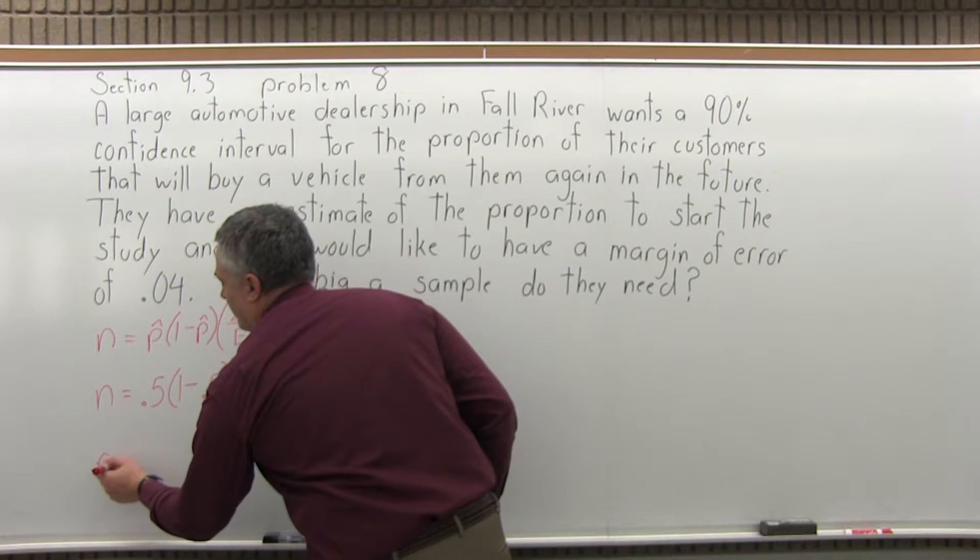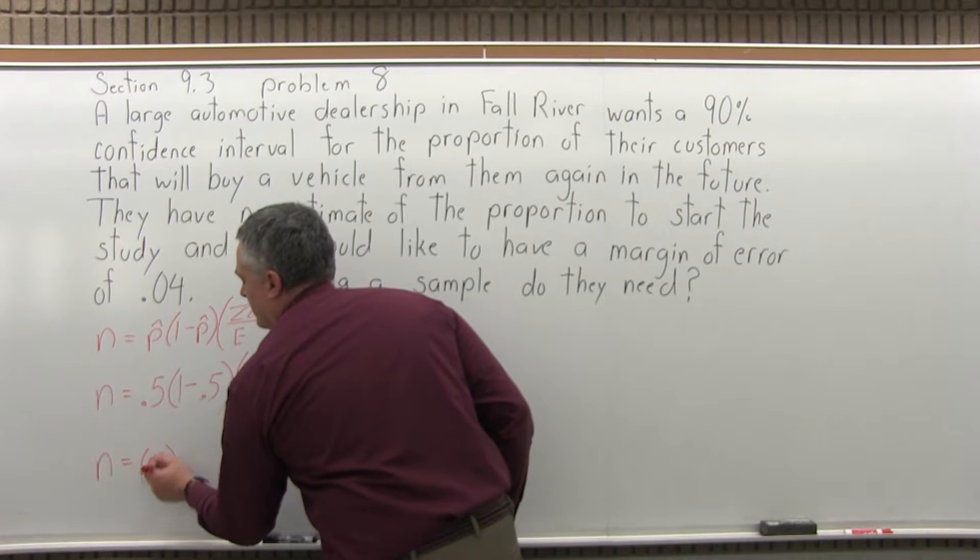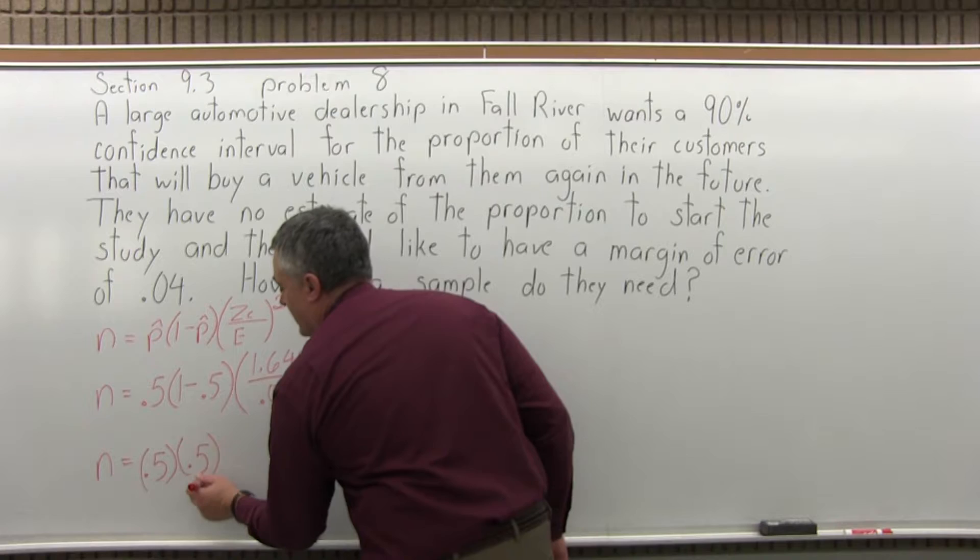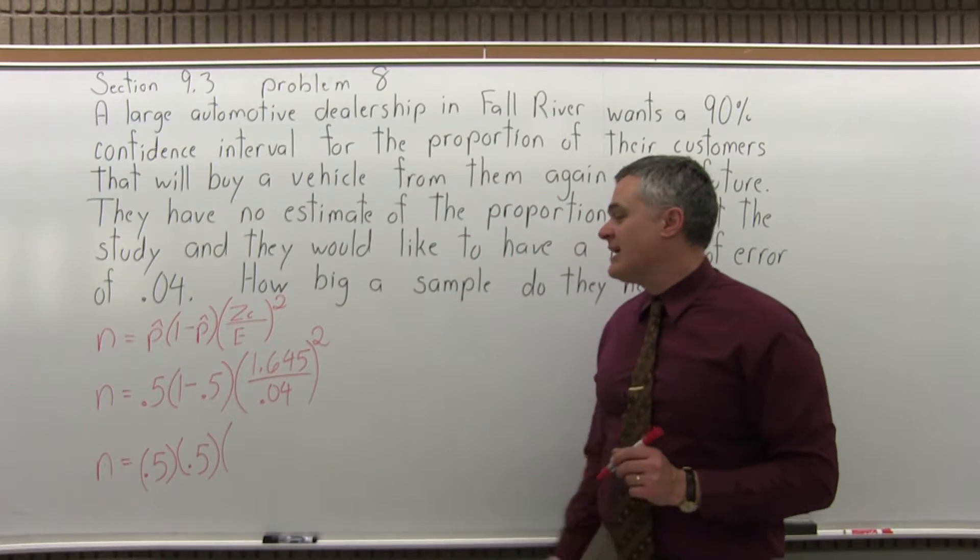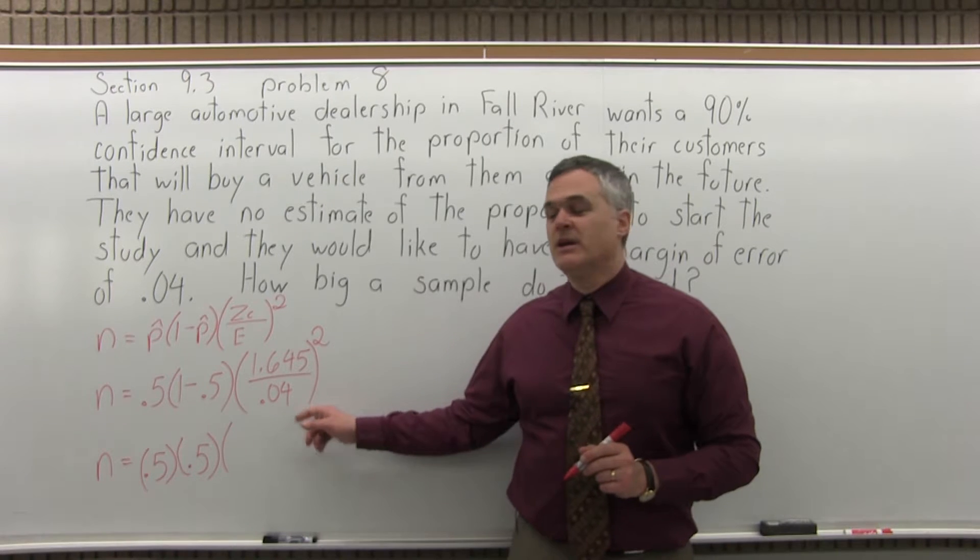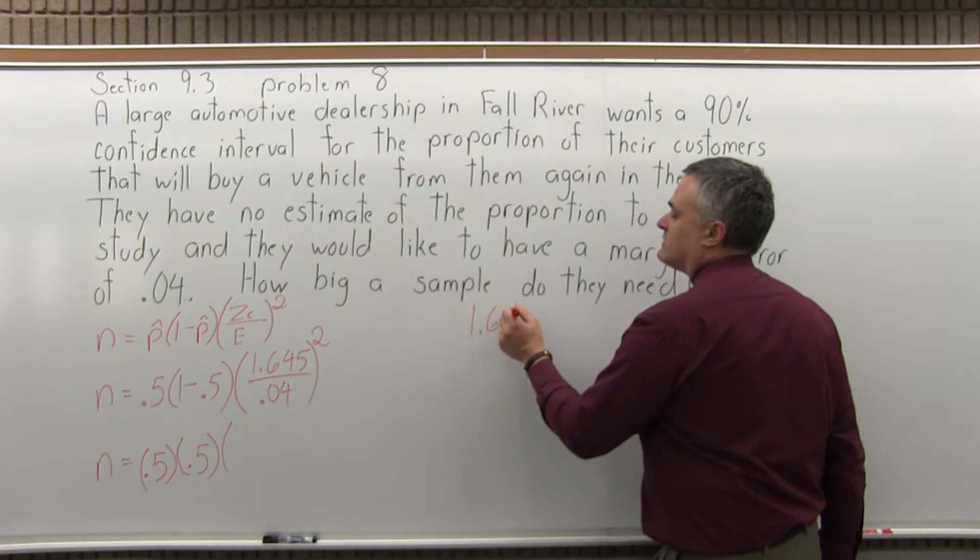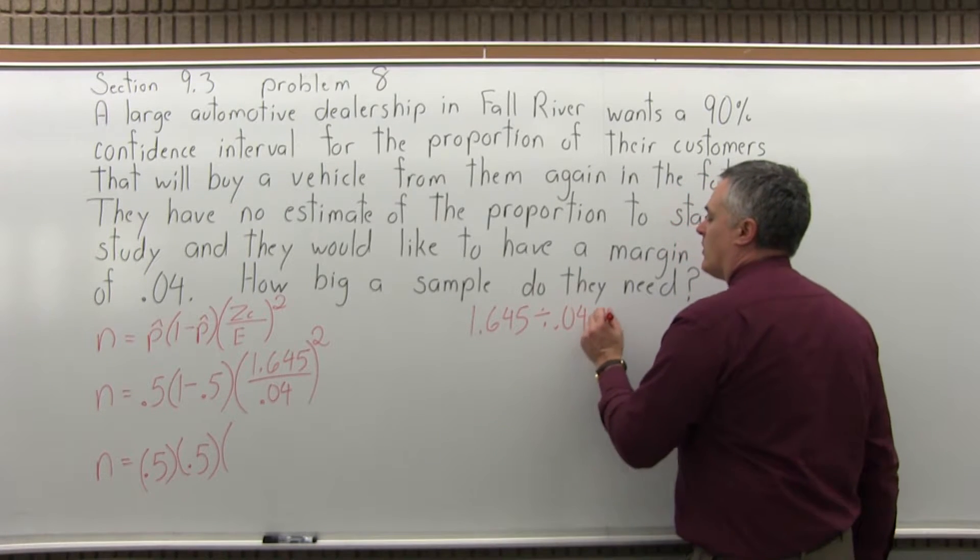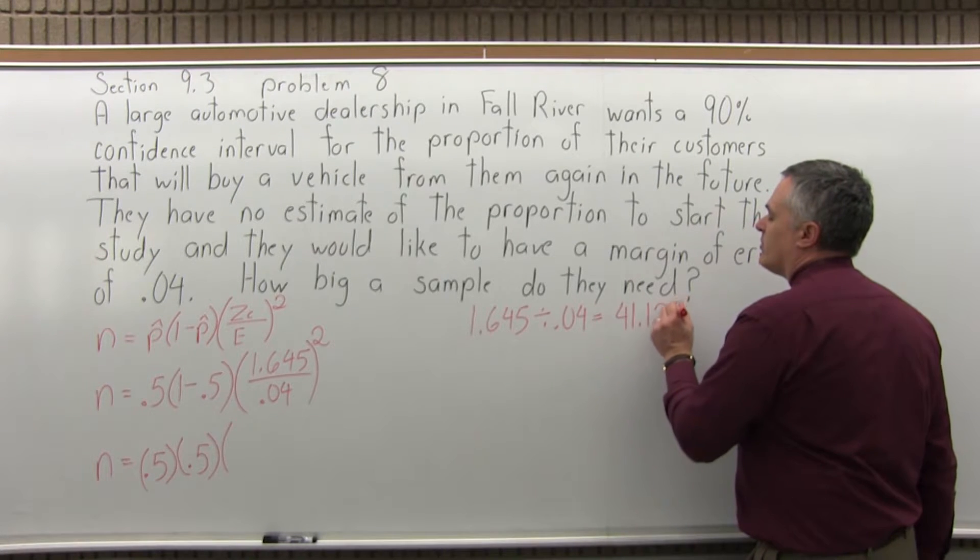So I will have n equals .5 from here, times 1 minus .5 in the next set of parentheses, that will be .5 again. Times 1.645 divided by .04. That's something you're probably going to want to use a calculator for, it's 1.645 divided by .04. And I can get started without a calculator, it's 41.125.